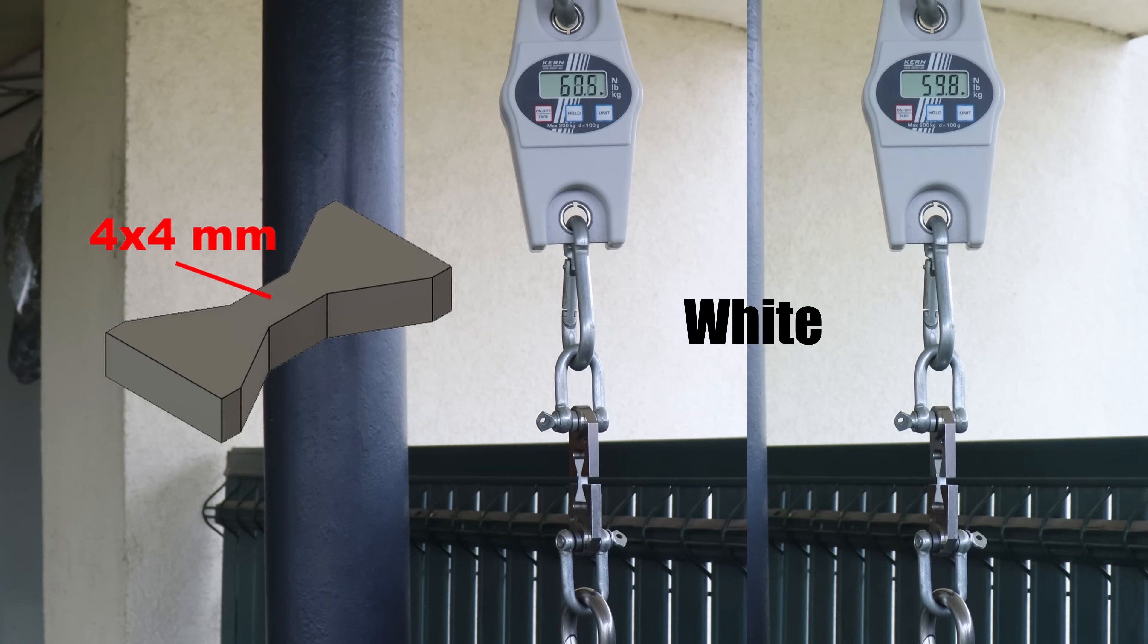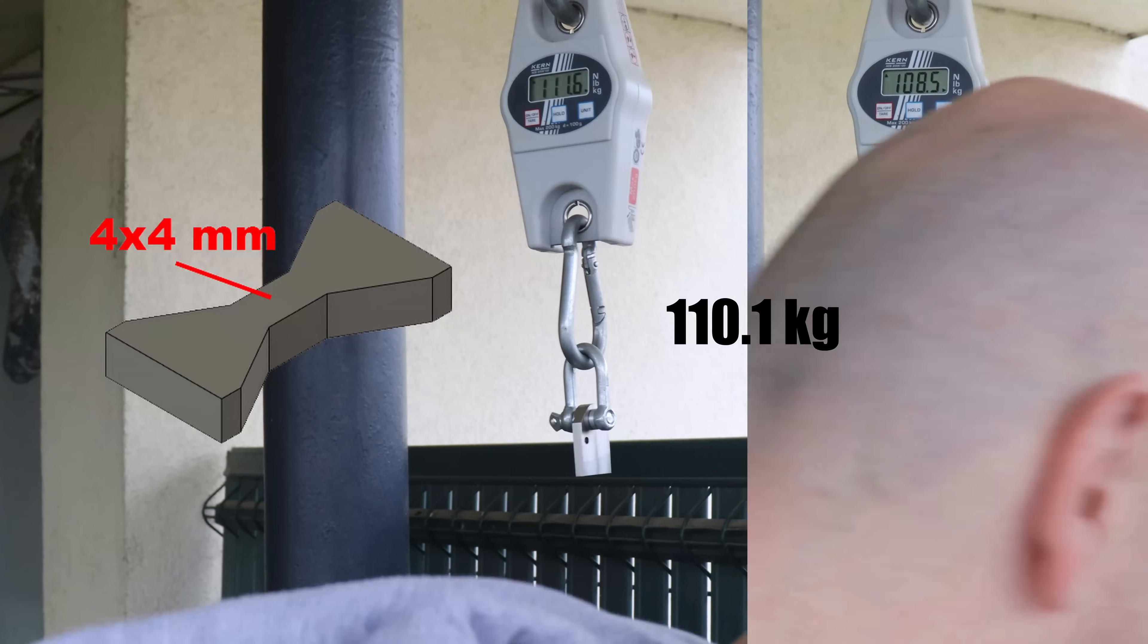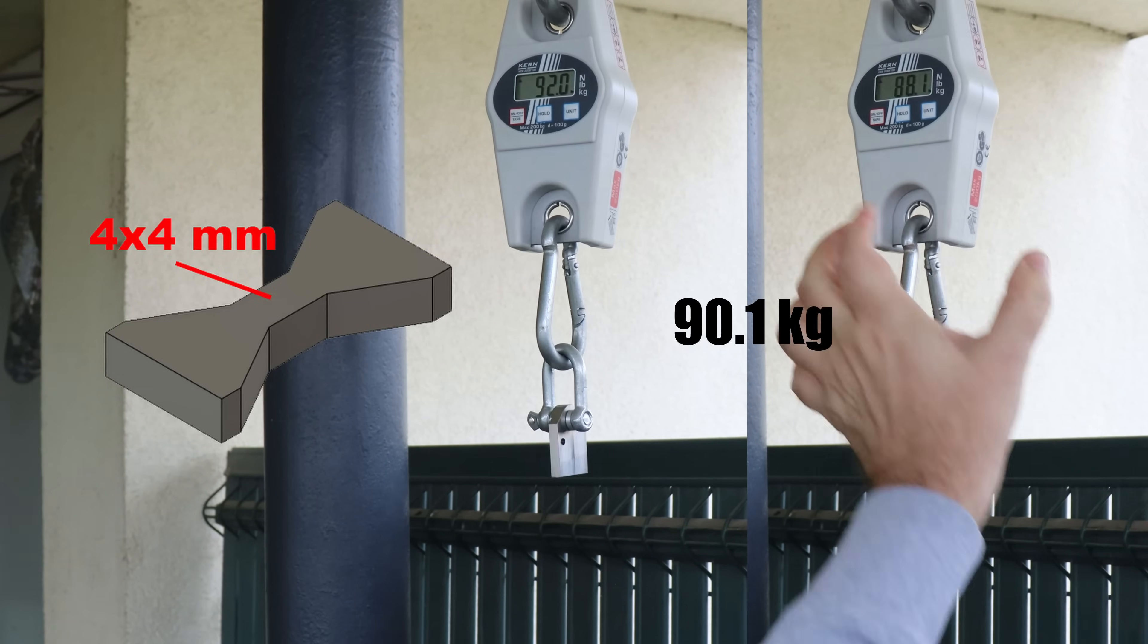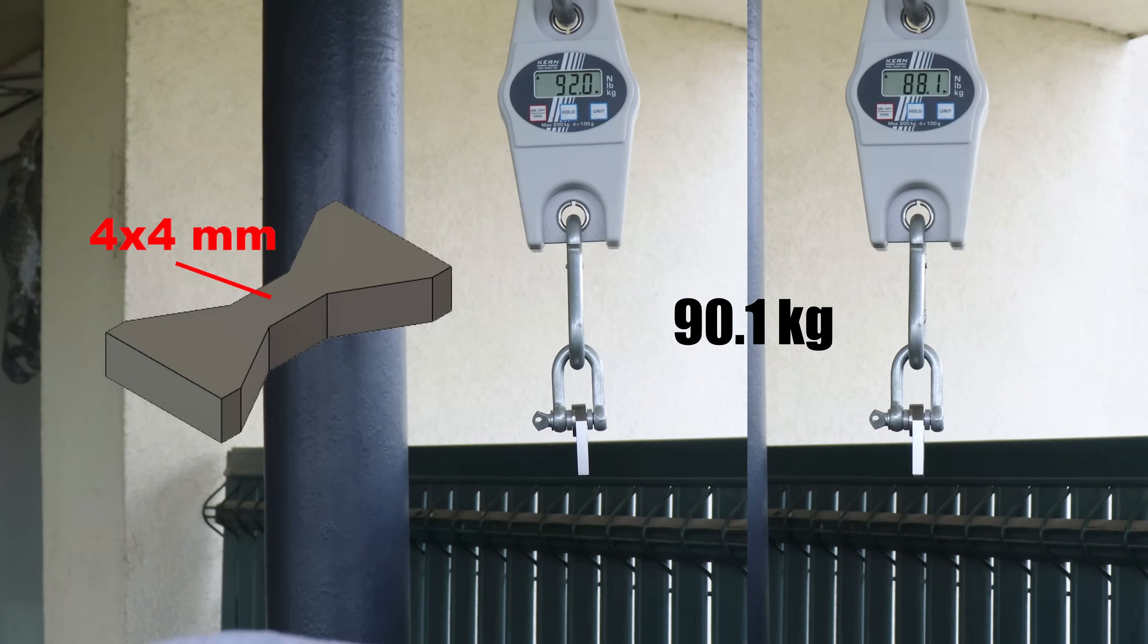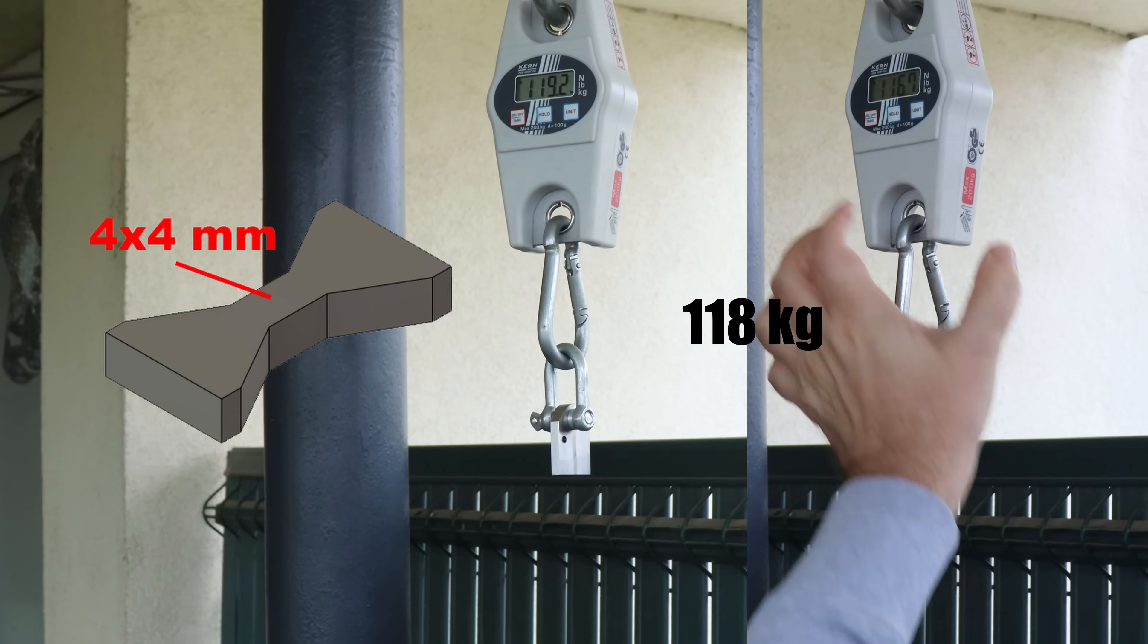The tensile test with horizontally printed test objects. And this is the average value for the white. Transparent, a little bit weaker. And this is the black one, a little bit stronger.